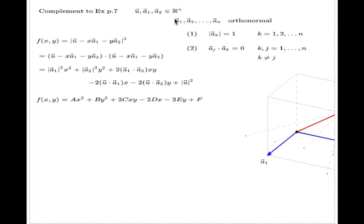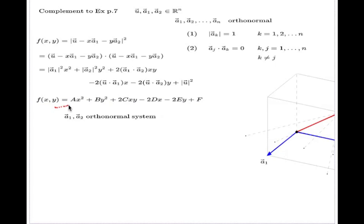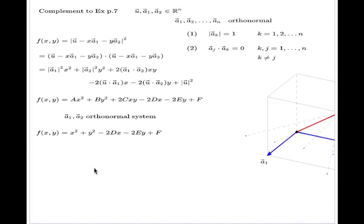Now if I put this extra condition on my two vectors a1 and a2 — if I request them to be orthonormal — and go back to this problem, this function becomes a lot simpler. The coefficient A becomes 1 (unit condition), B becomes 1 (unit condition), and C becomes 0 (perpendicularity condition on a1 and a2). So if I know in advance that a1 and a2 are orthonormal, my function becomes much simpler.